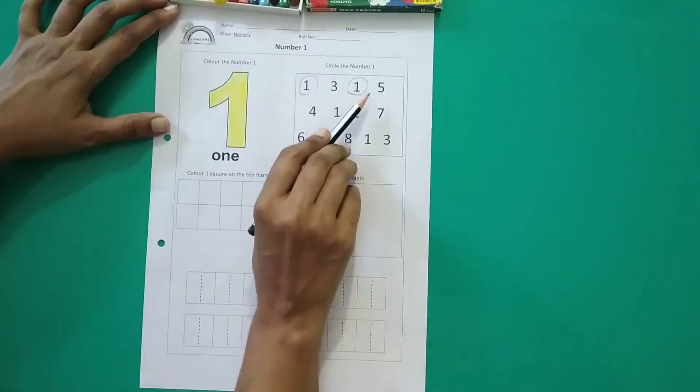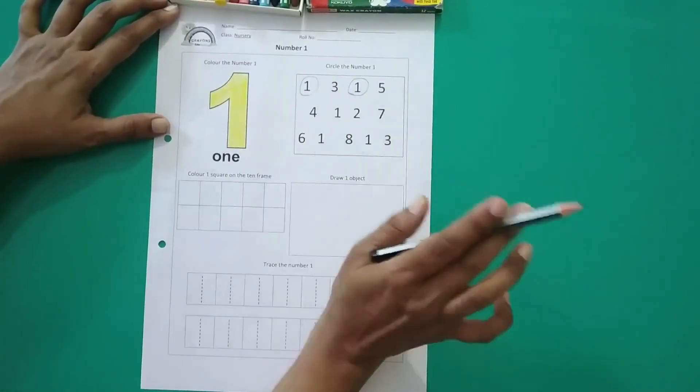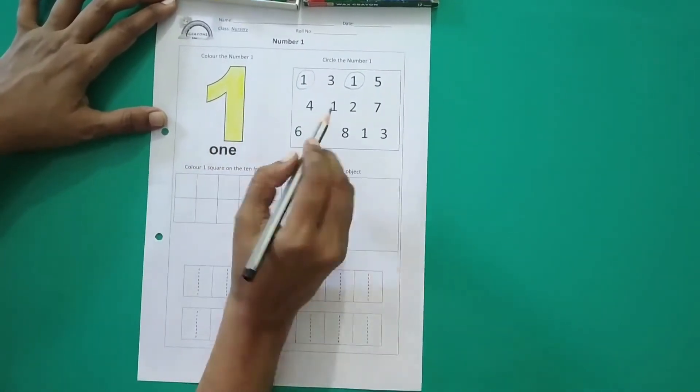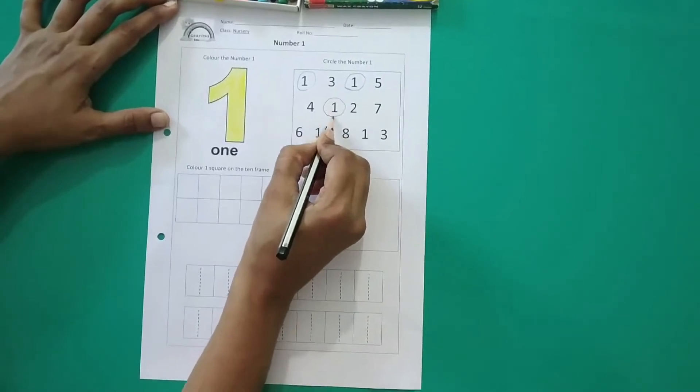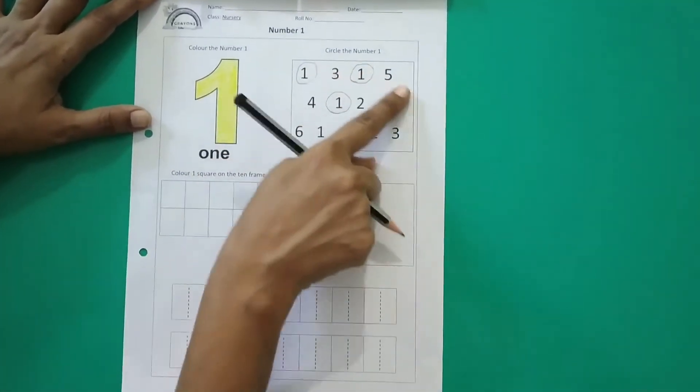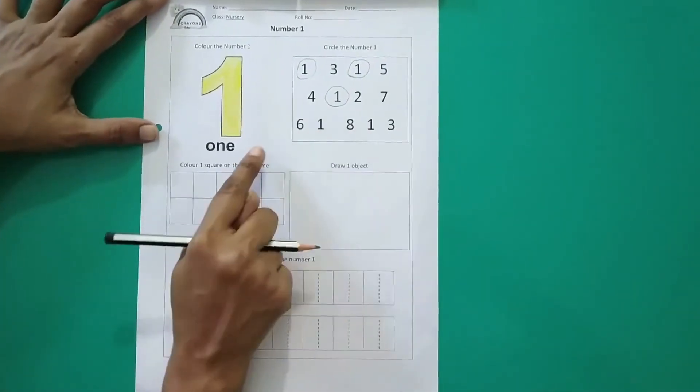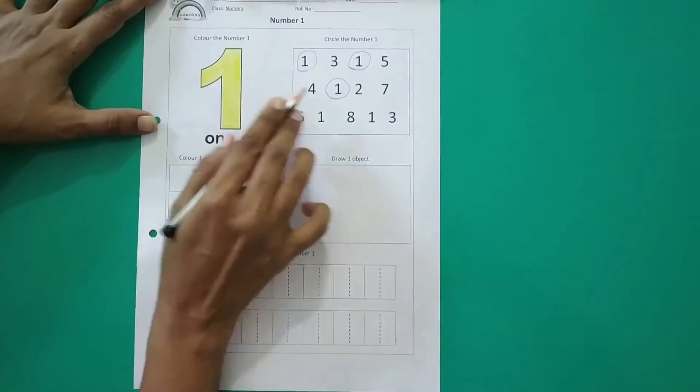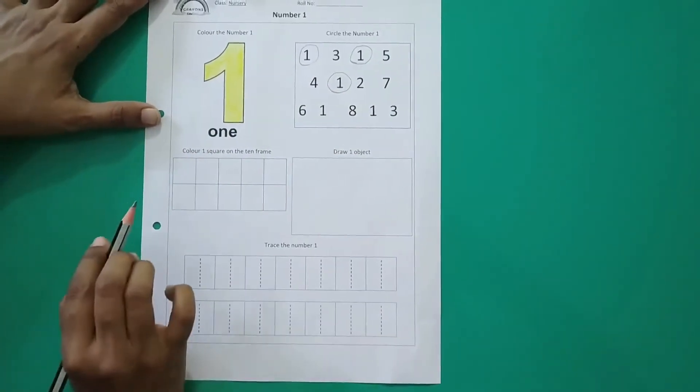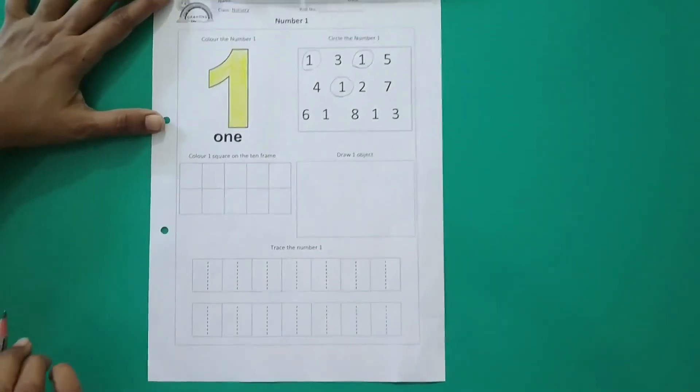What's the next number? 5. Shouldn't I circle 5? No. No circling number 5, only number 1. Where is 1 again? This is 1. Here 1 hai, 1 ko circle karenge. So now in the same way you have to find where you can see the number 1 and circle it. Jahan aapko number 1 dikhega hai in the box mein, usko hi aap circle karenge. So you have to complete the rest of the circles.